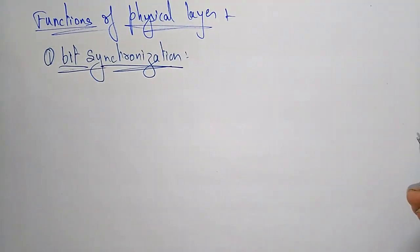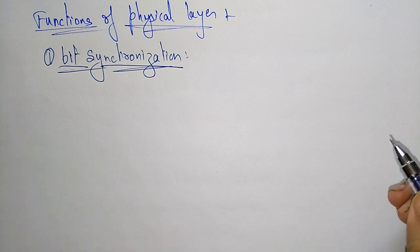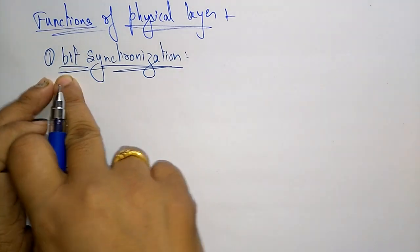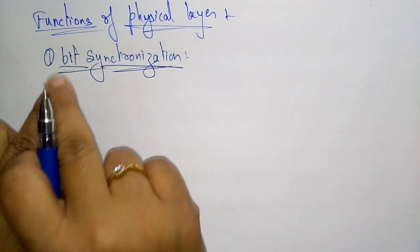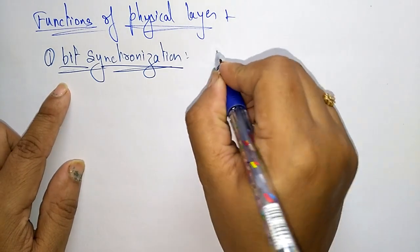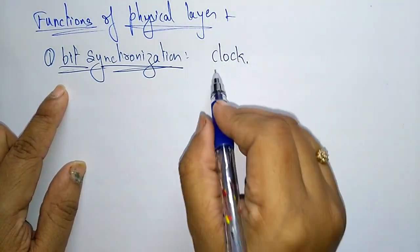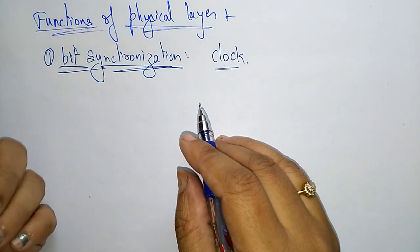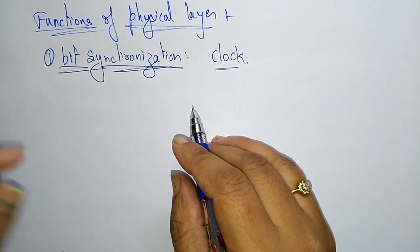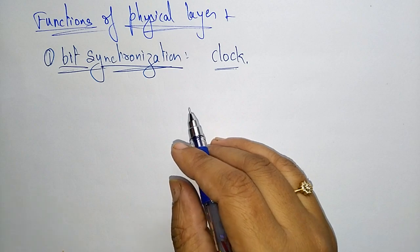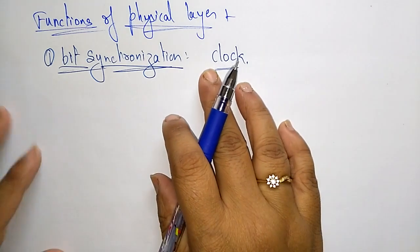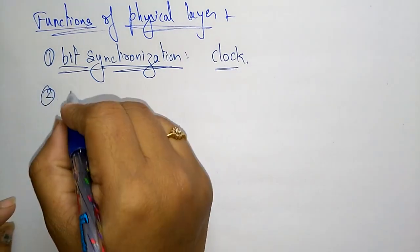The first function of the physical layer is bit synchronization. Bits — that is ones and zeros — are synchronized in the physical layer with the help of a clock. With the help of the clock pulse signal, whatever bits are taken from the data link layer and sent to another physical layer are always synchronized. That is the first function. The next is bit rate control.